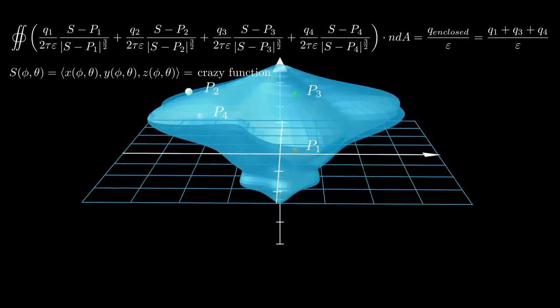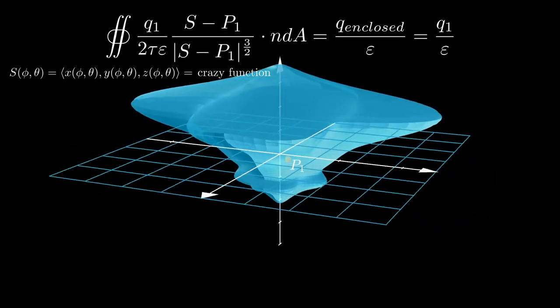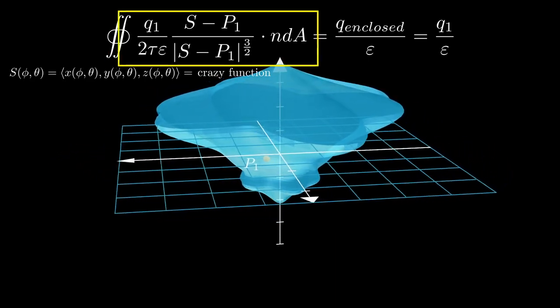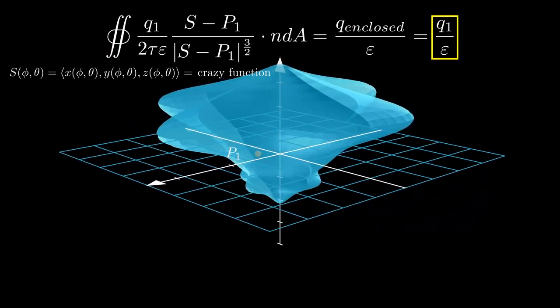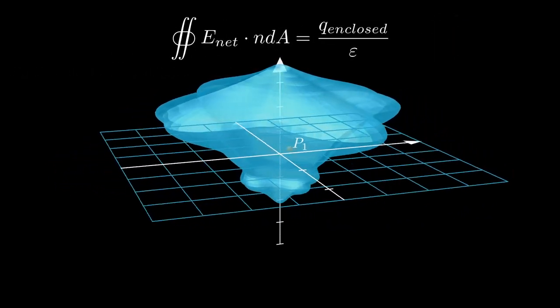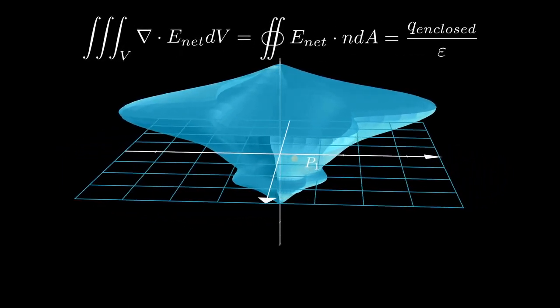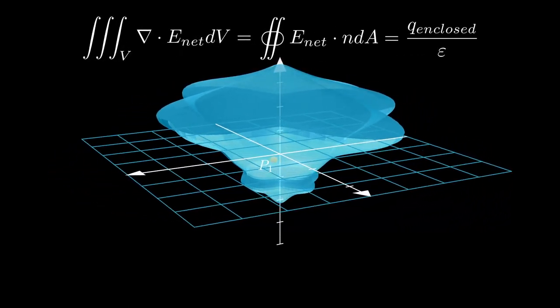Think about how difficult solving that integral would be, even for just one point charge. How could one simplify all of this to simply q over epsilon-naught? Well, there's actually a really simple derivation of Gauss's law that doesn't involve any crazy integrals. It's the one that uses the divergence theorem and the divergence of the electric field of a point charge.